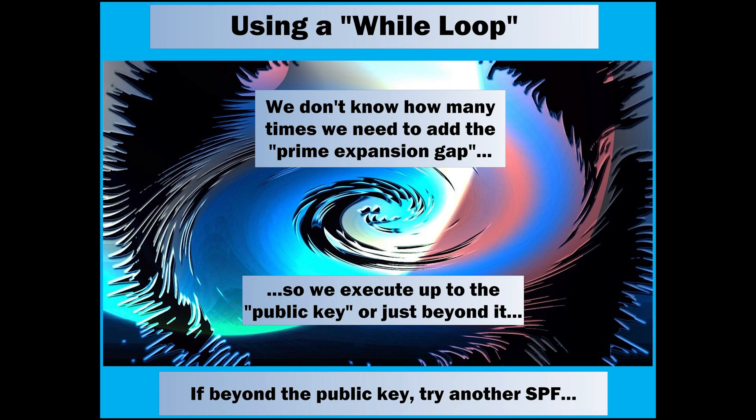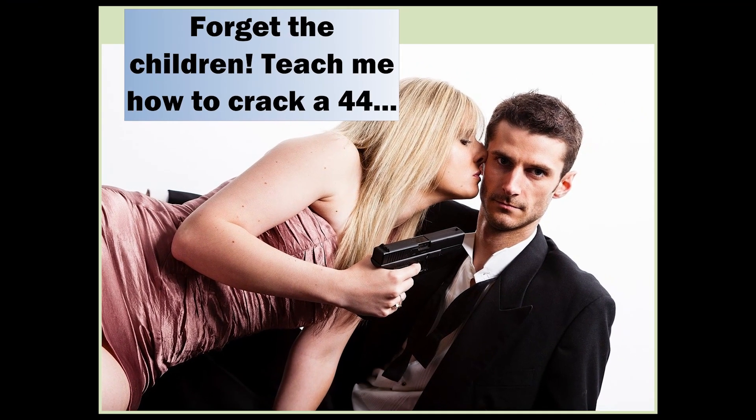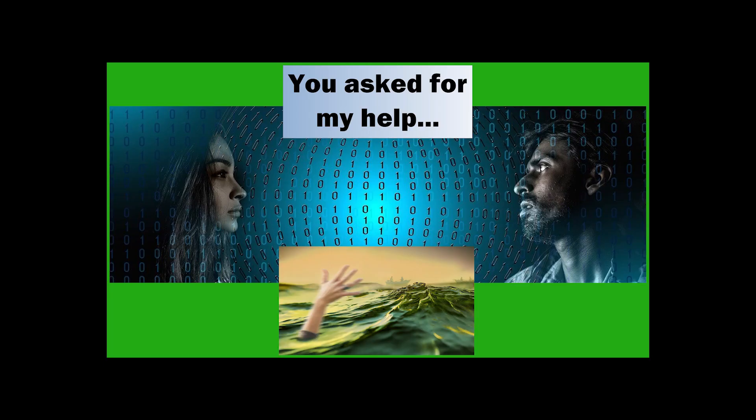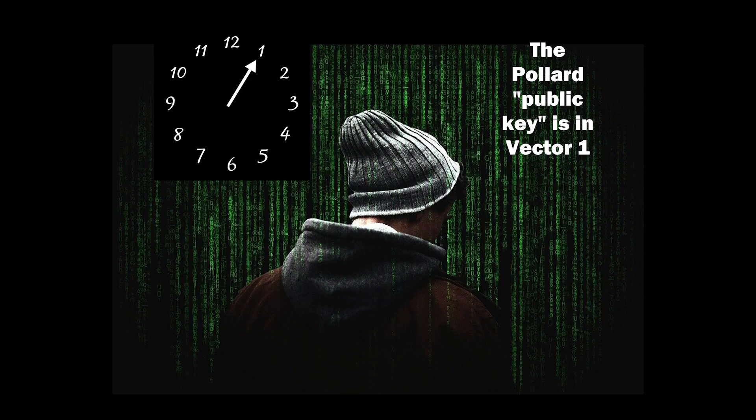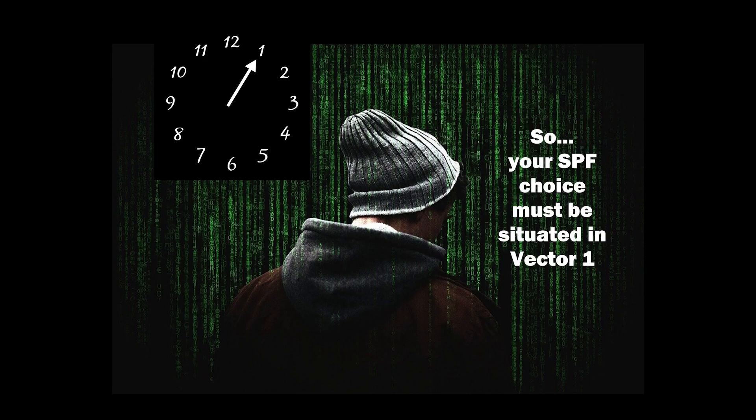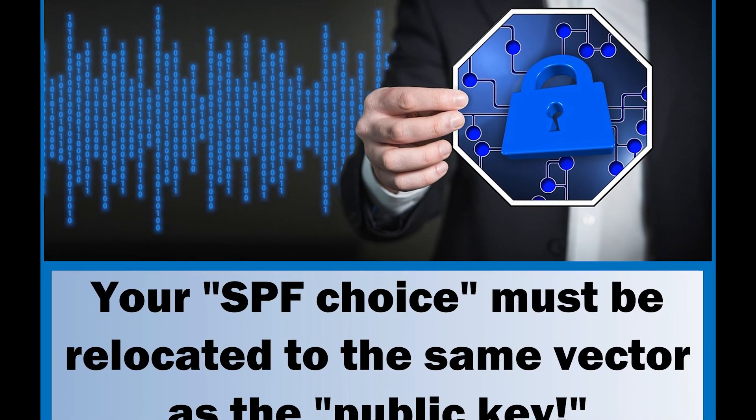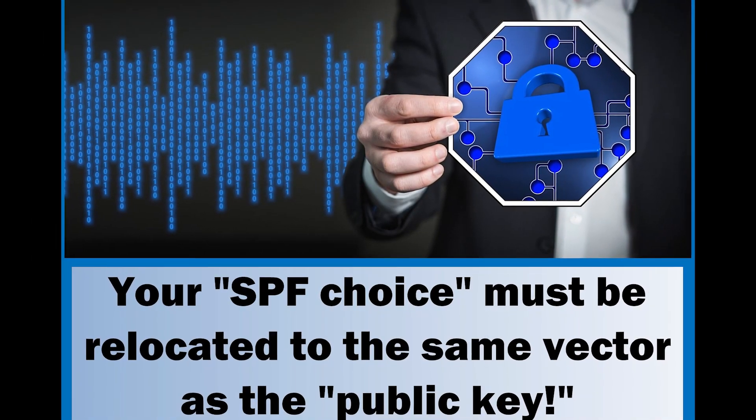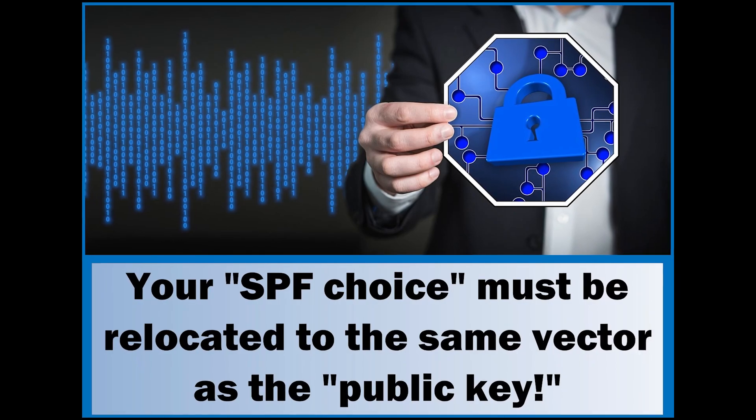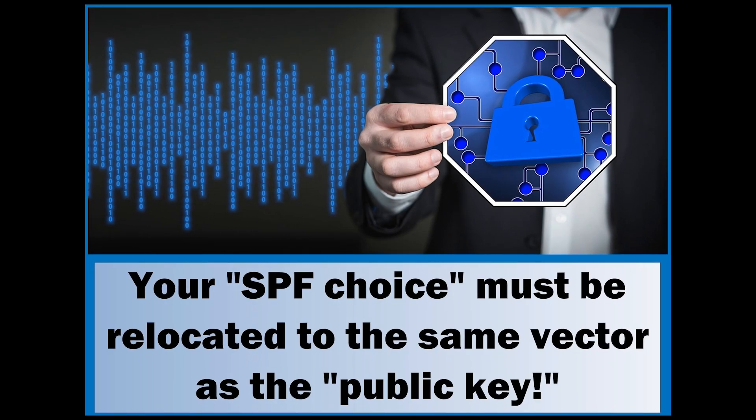Forget the children, teach me how to crack a 44. Dearest dear, you asked for my help. So don't interrupt. The Pollard public key is in vector 1. That's the spoken clock math. So, your potential smaller prime factor must be situated in vector 1. Your smaller prime factor choice must be relocated to the same vector as the public key, if it isn't already in the public key vector.